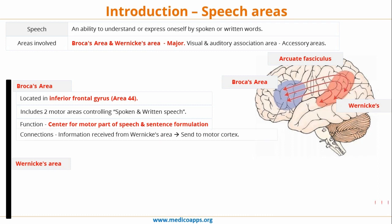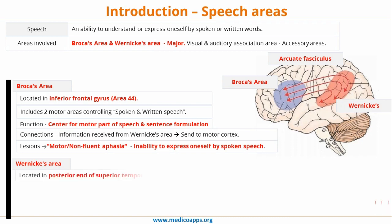Broca's area receives information from Wernicke's area via the arcuate fasciculus and finally sends it to the motor cortex. Lesions of Broca's area will lead to motor or non-fluent aphasia, where the patient is unable to express himself via spoken speech or even written speech. We will learn about this aphasia a little later in the same lecture.